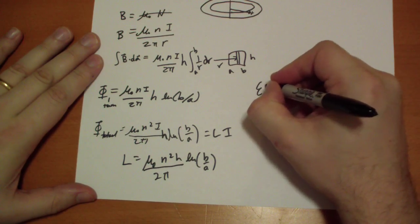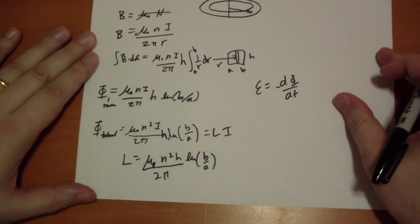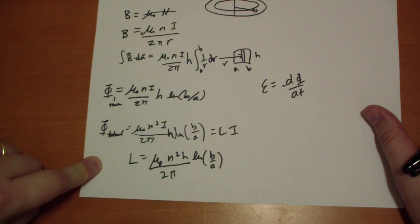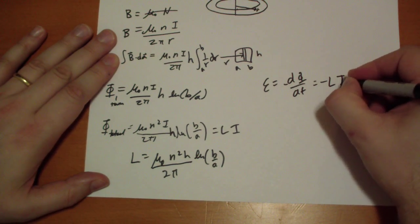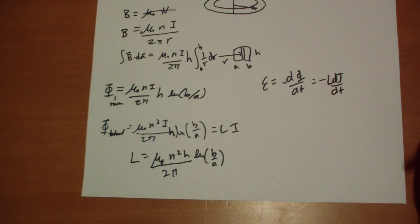So the EMF is d phi by dt, negative d phi by dt. And so that's going to be equal to negative L di by dt. Self-inductance there. We call this a back EMF. Am I supposed to save this for the next example? Yeah, let's save it for example 12. So on to example 12. We'll do that next. Thanks for your time. Bye.